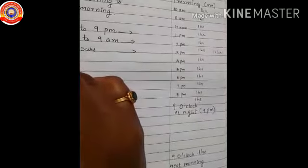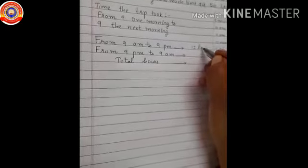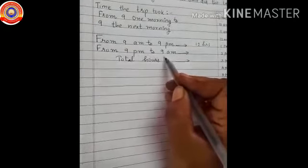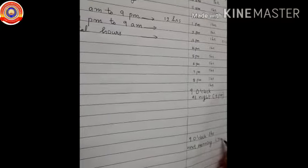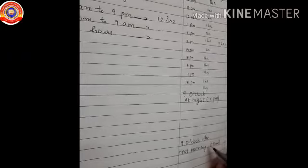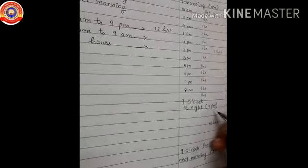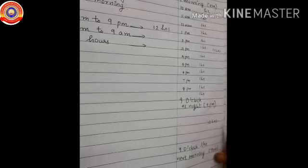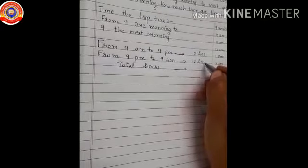From 9.00am to 9.00pm: 12 hours. Now we have to find from 9.00pm to 9.00am the next morning. How many hours are there? Yes, 12 hours. From 9.00am to 9.00pm there are 12 hours, and similarly from 9.00pm to 9.00am there will also be 12 hours.